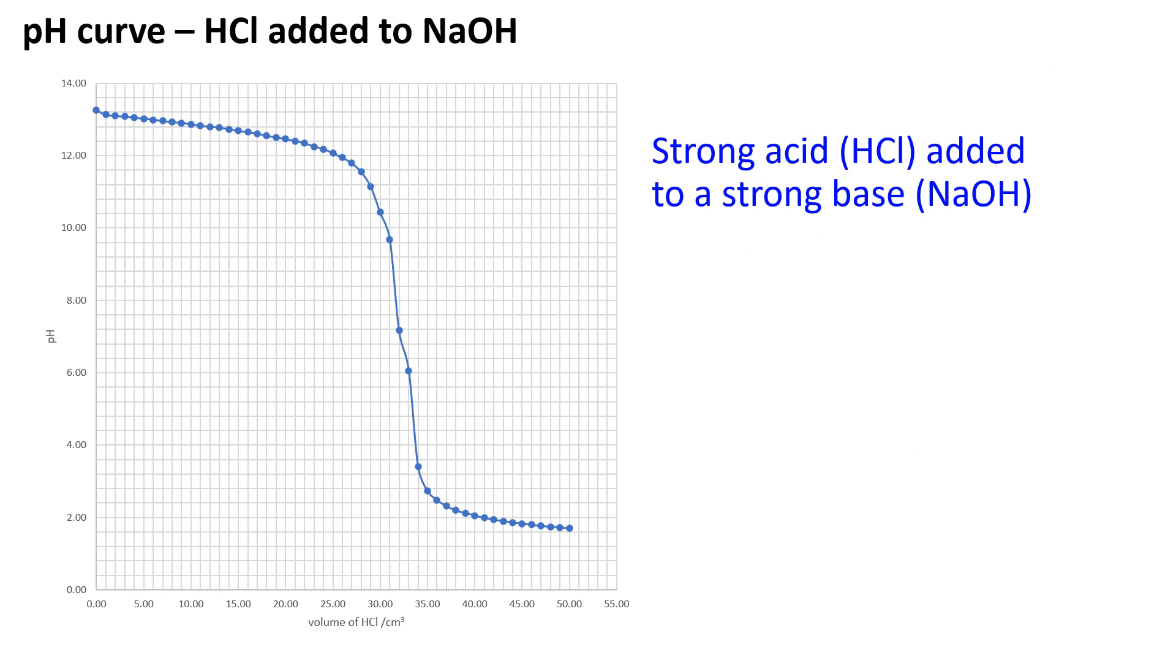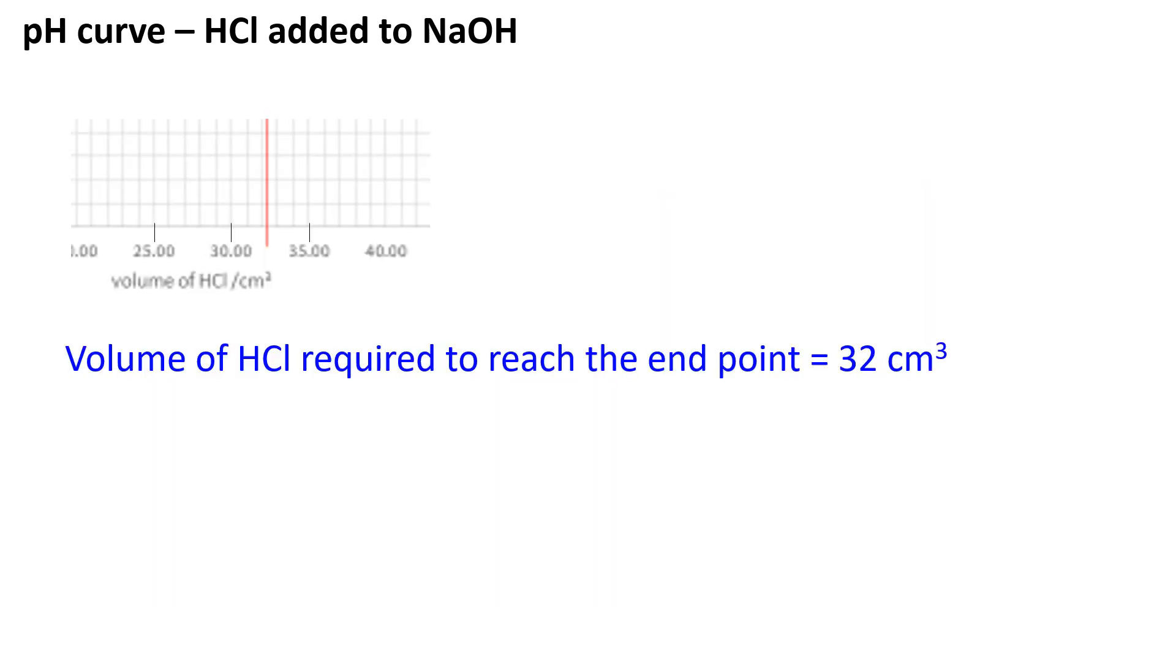The graph that is plotted is known as a pH curve. The shape of the curve shown here is typical for the addition of a strong acid such as HCl to a strong base such as NaOH. The point of neutralization occurs at the most vertical portion of the curve. This corresponds to a pH change from above 7 to below 7 in this case. Using our example, the volume of hydrochloric acid required to reach the endpoint is 32 cm³. I have quoted this volume to the nearest 1 cm³ because hydrochloric acid was added in 1 cm³ portions.